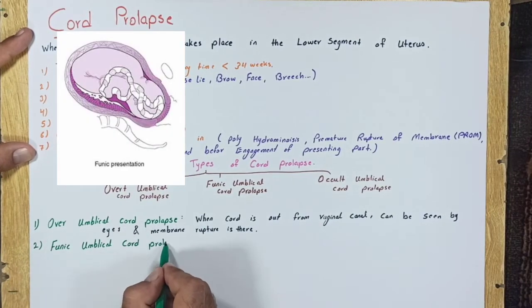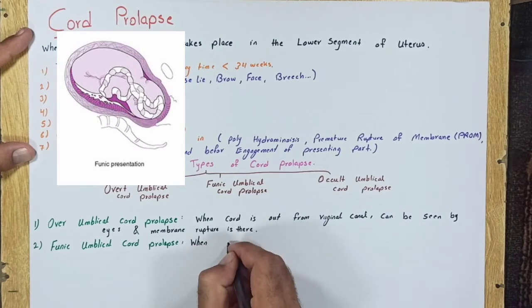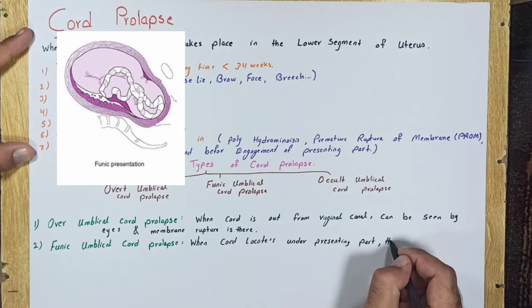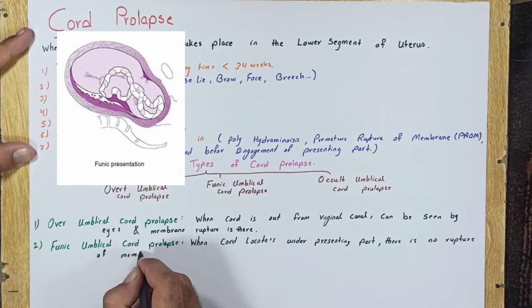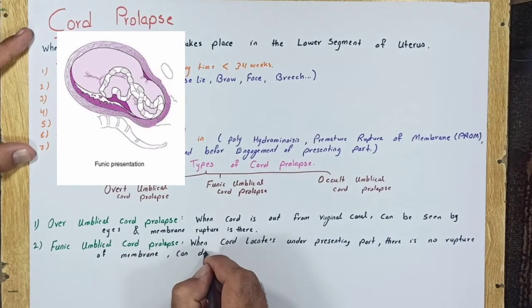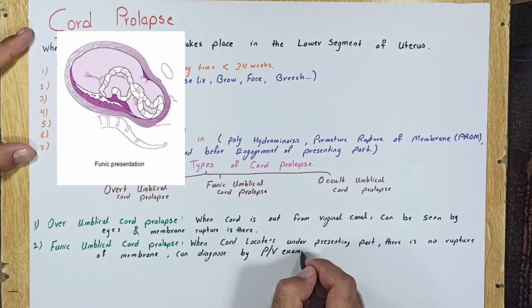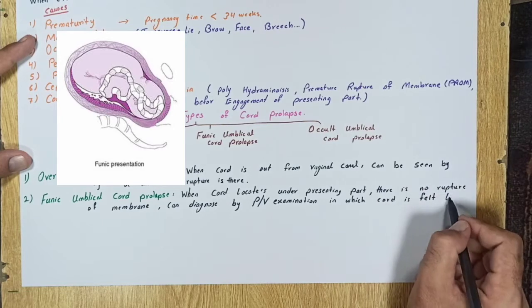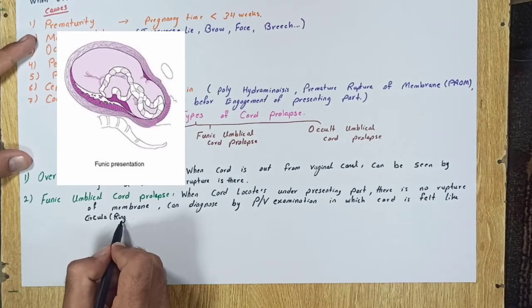Funic umbilical cord prolapse: When umbilical cord locates under presenting part, there is no rupture of membrane. It can be diagnosed by pervaginal examination in which cord is felt like circular or ring by fingers.